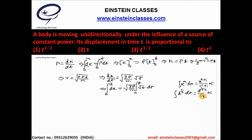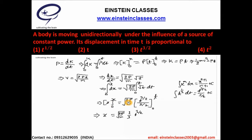The integration of dx gives x from 0 to x. The constant √(2P/m) comes outside, and the integration of t^(1/2) from 0 to t gives t^(3/2)/(3/2). After substituting upper and lower limits, we get x = √(2P/m) × (2/3) × t^(3/2). Since √(2P/m) × (2/3) is a constant, we conclude that displacement x is proportional to t^(3/2).